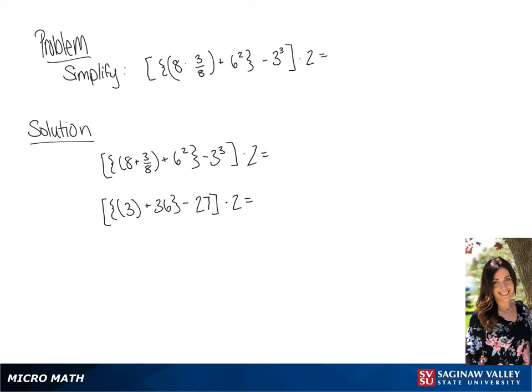Now we can simplify the parentheses. So we have 39 minus 27 in the brackets times 2.